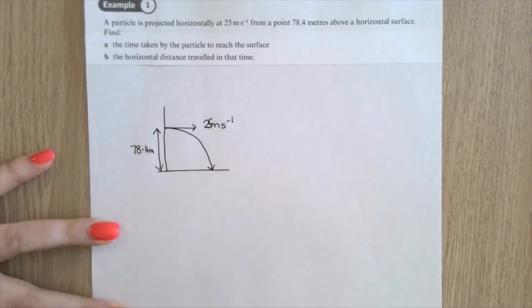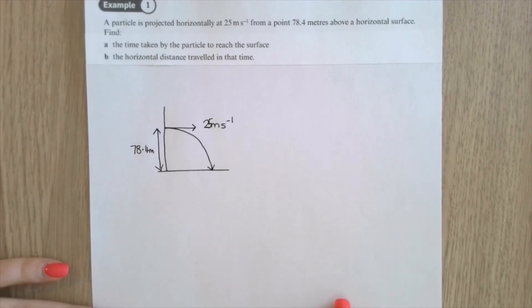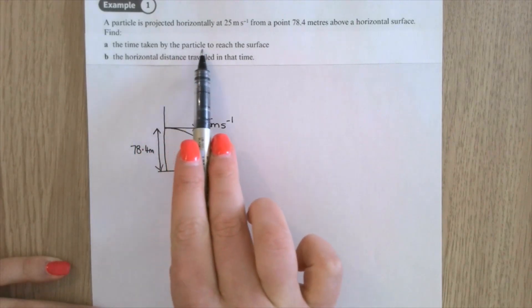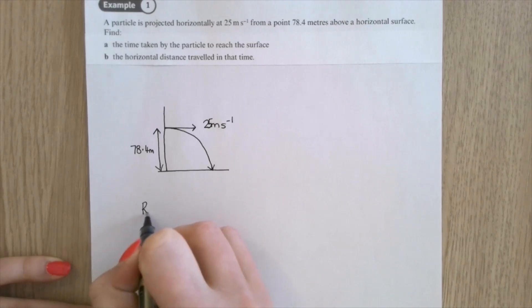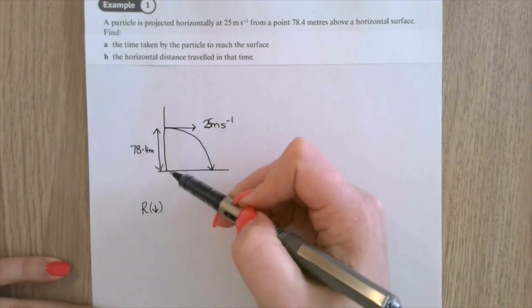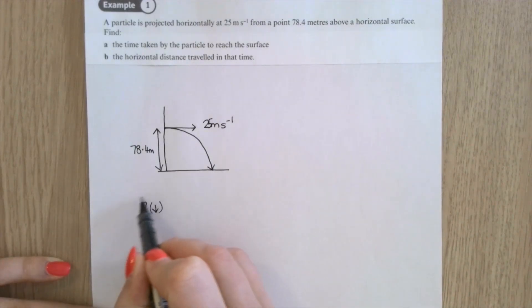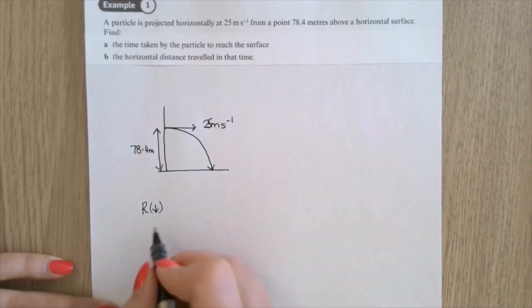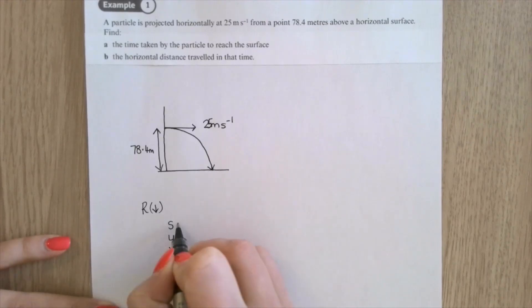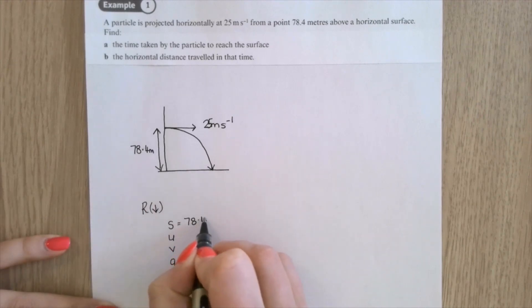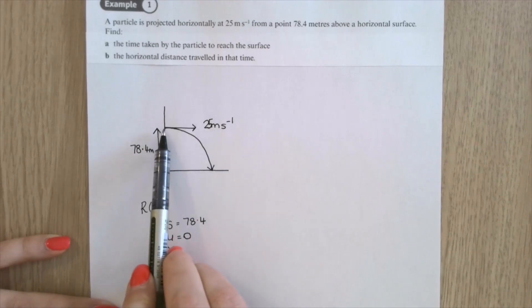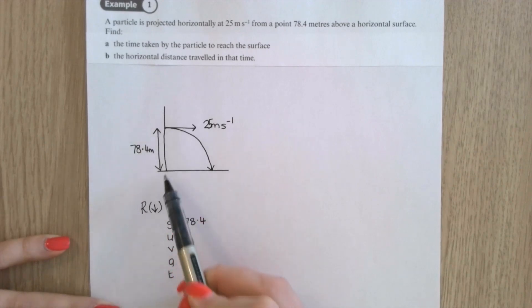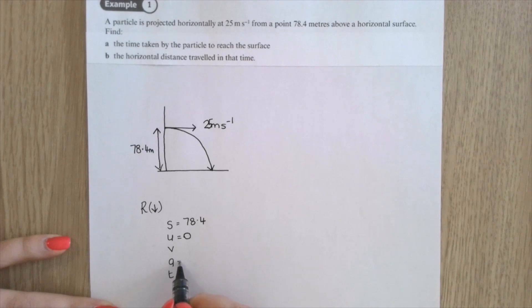Part a: find the time taken for the particle to reach the surface. I'm looking at the vertical distance from where it started to where it ends up. Resolving in the vertical direction taking down as positive: displacement = +78.4, initial vertical velocity = 0 (the 25 m/s is horizontal), acceleration = 9.8, find t.